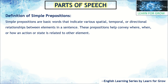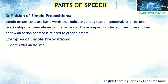Simple prepositions are basic words that indicate spatial, temporal, or directional relationships between elements in a sentence. These prepositions help convey where, when, and how an action or state is related to other elements. Examples: 'She is sitting on the sofa,' 'The cat is under the table.' The highlighted prepositions give meaningful information about the sentence.